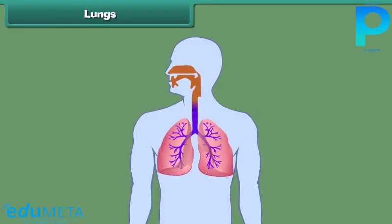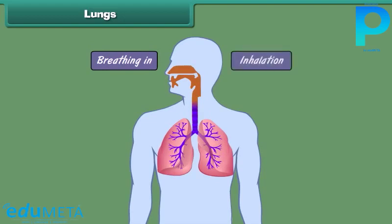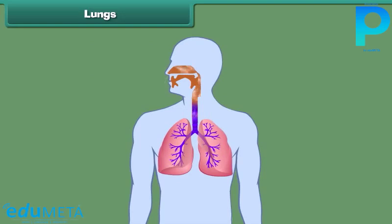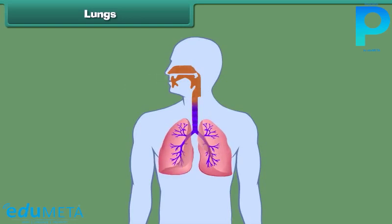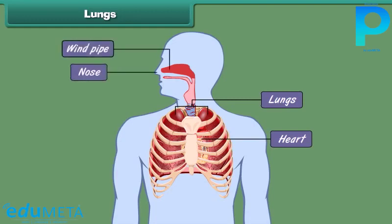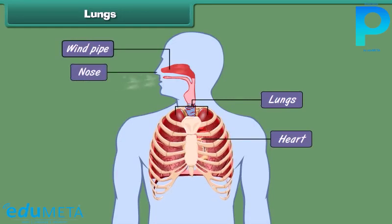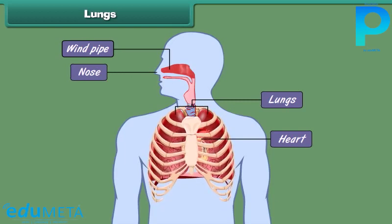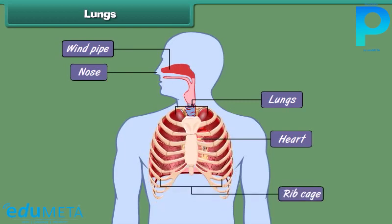All living organisms breathe in and breathe out air. Breathing in is known as inhalation and breathing out is known as exhalation. Once inhaled, the air reaches the lungs, where it is exchanged for impure air, which is then exhaled. The human body has two lungs located on either side of the heart in the chest cavity. The nose and windpipe form the passage for air to move in and out of the lungs, and like the heart, the ribcage also protects the lungs.